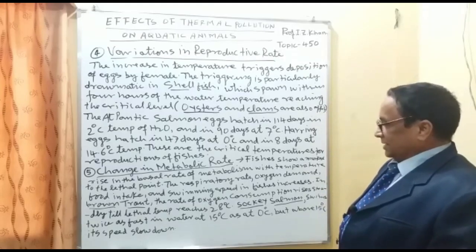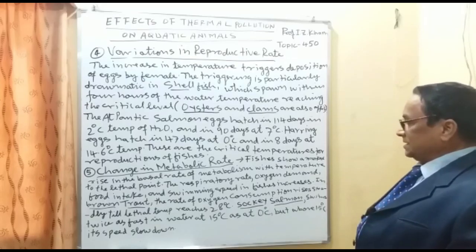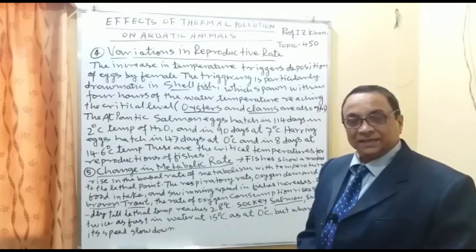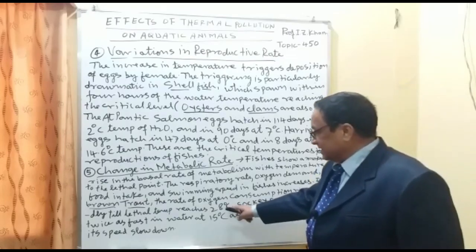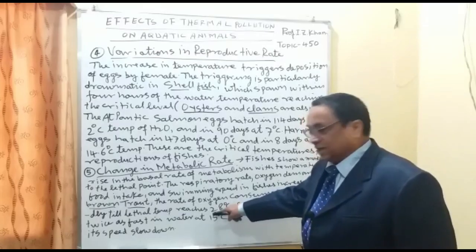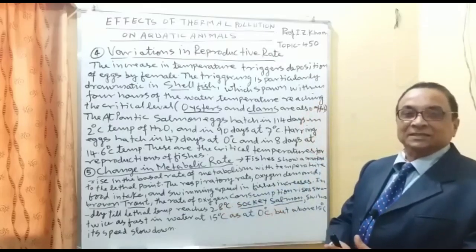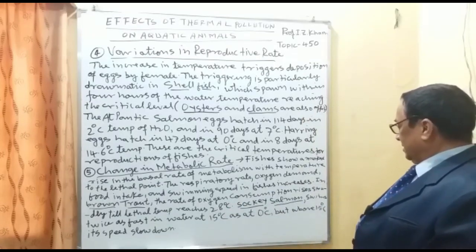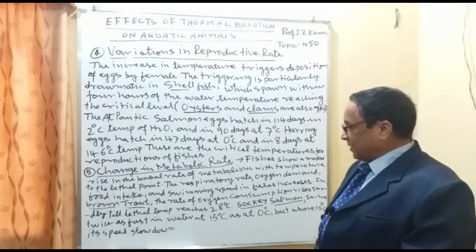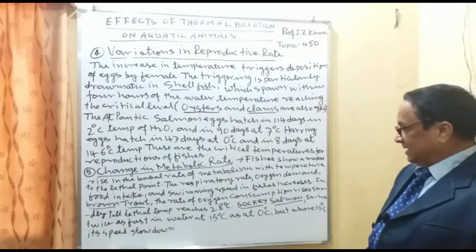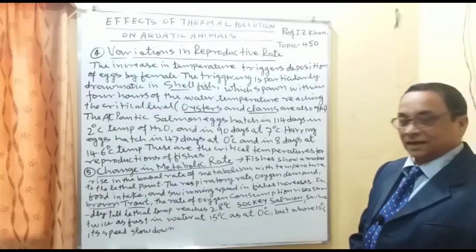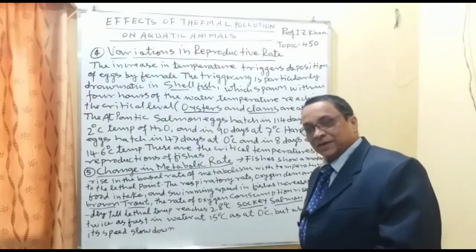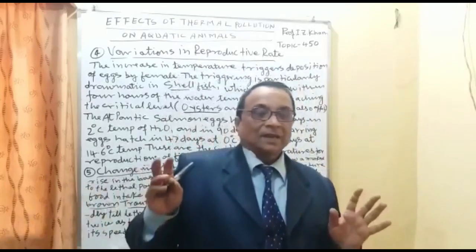In brown trout, the rate of oxygen consumption rises steadily until the lethal temperature reaches 28 degrees centigrade. Sockeye salmon swims twice as fast at 15 degrees centigrade as at zero degrees centigrade, but above 15 degrees the speed slows down.